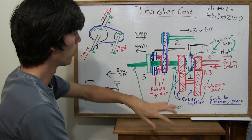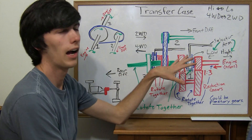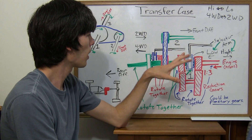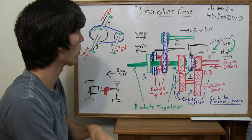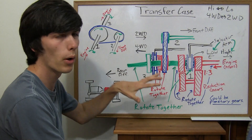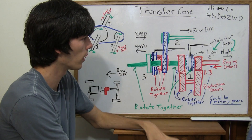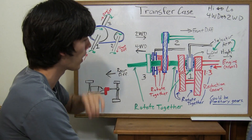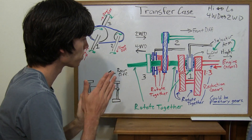So we've covered the high-to-low gear switching, which is probably the more complicated part compared to switching from two-wheel drive to four-wheel drive. Both basically use the same principle in the diagram I'm showing here.